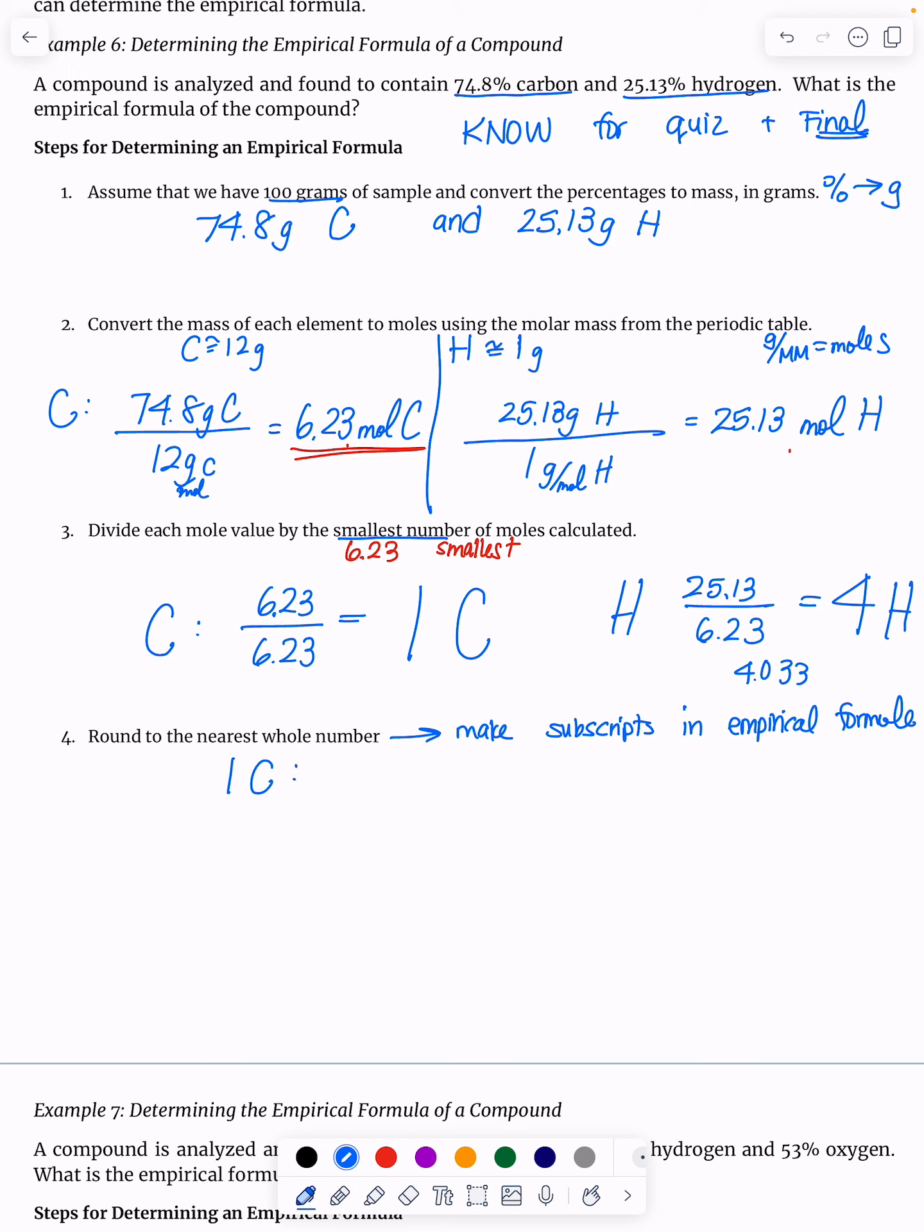And so we have one carbon, four hydrogens. This cannot be divided any further. I'm going to make this one and four into subscripts to write our empirical formula now. C1H4. Therefore, our empirical formula is CH4.